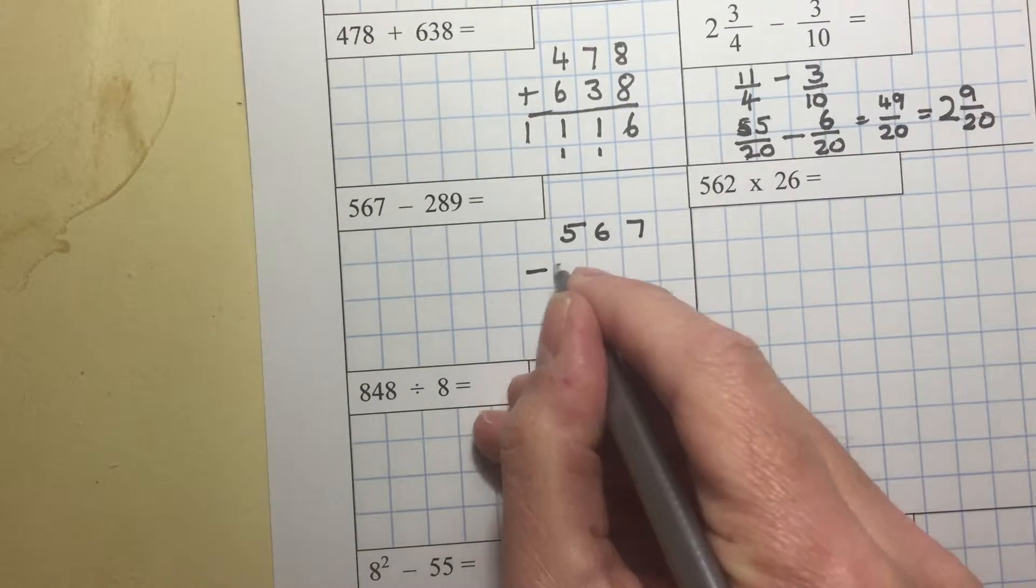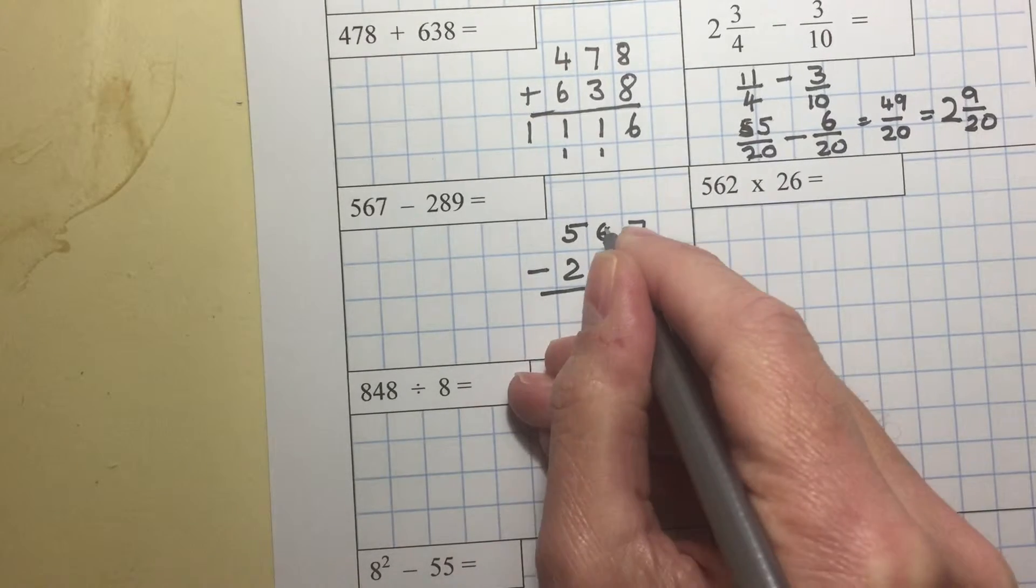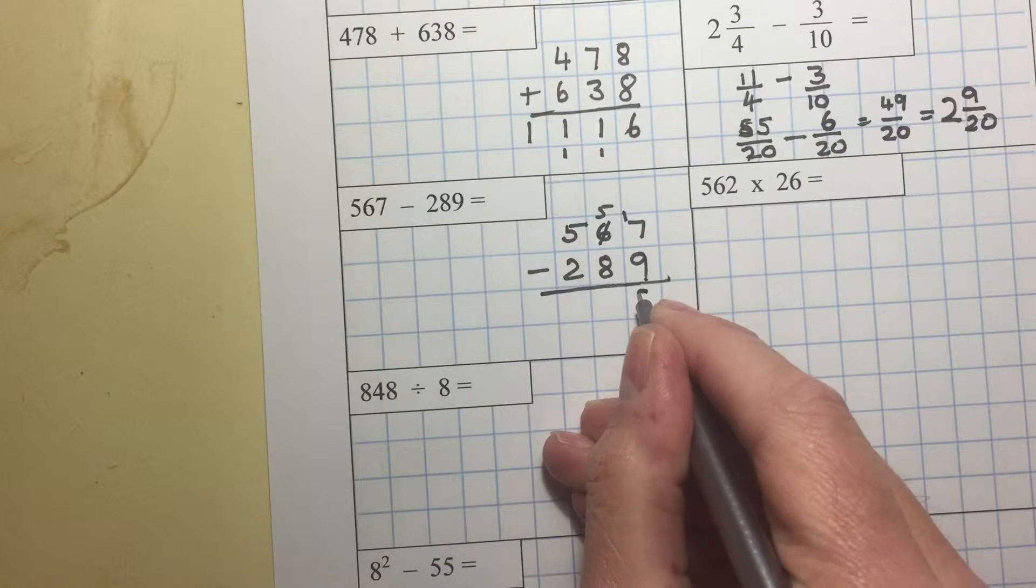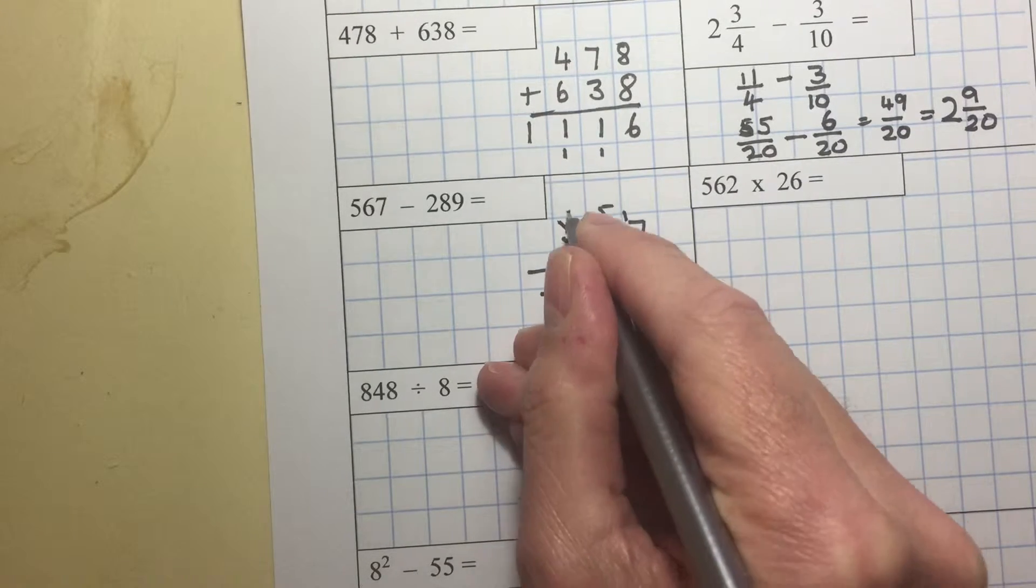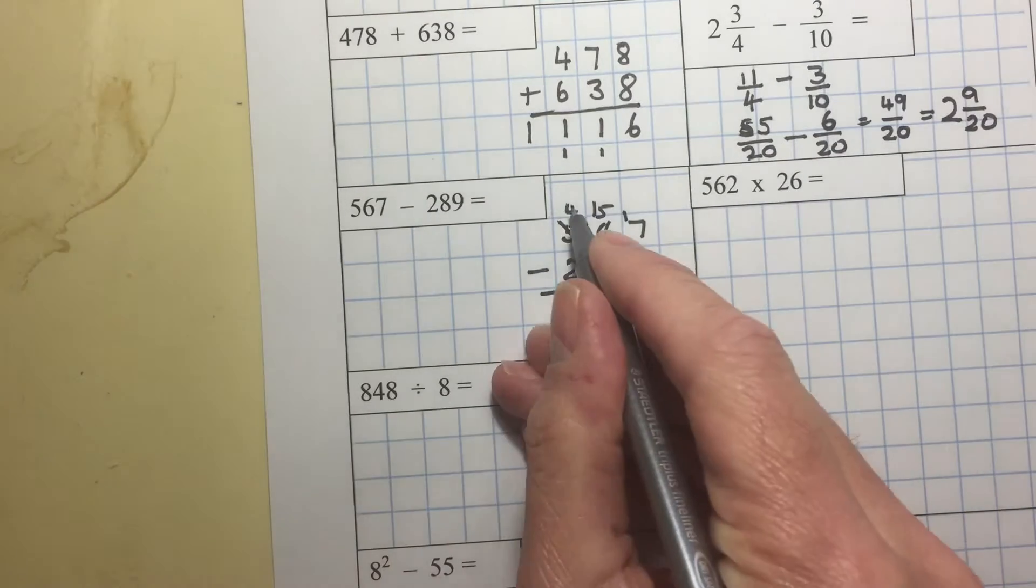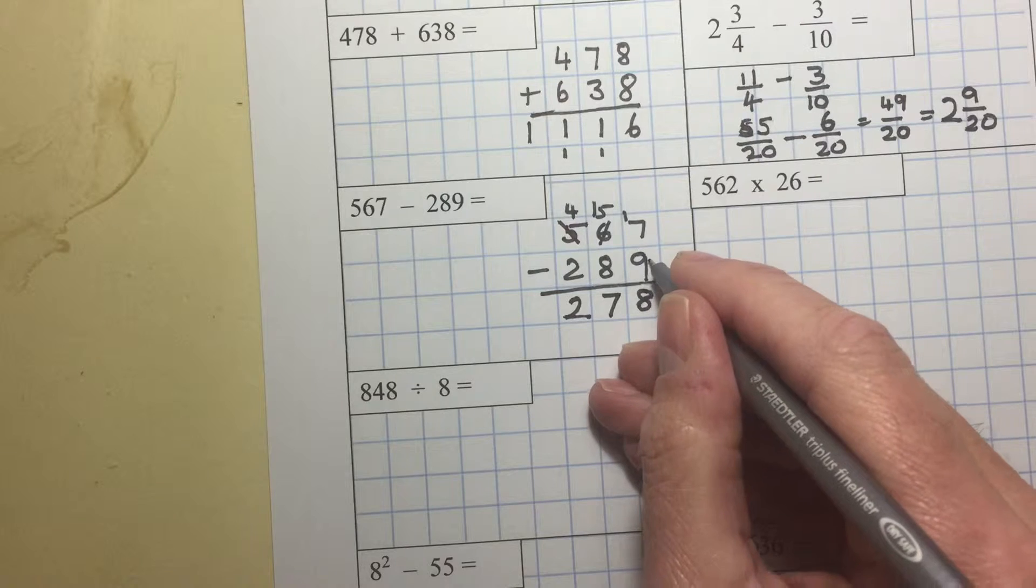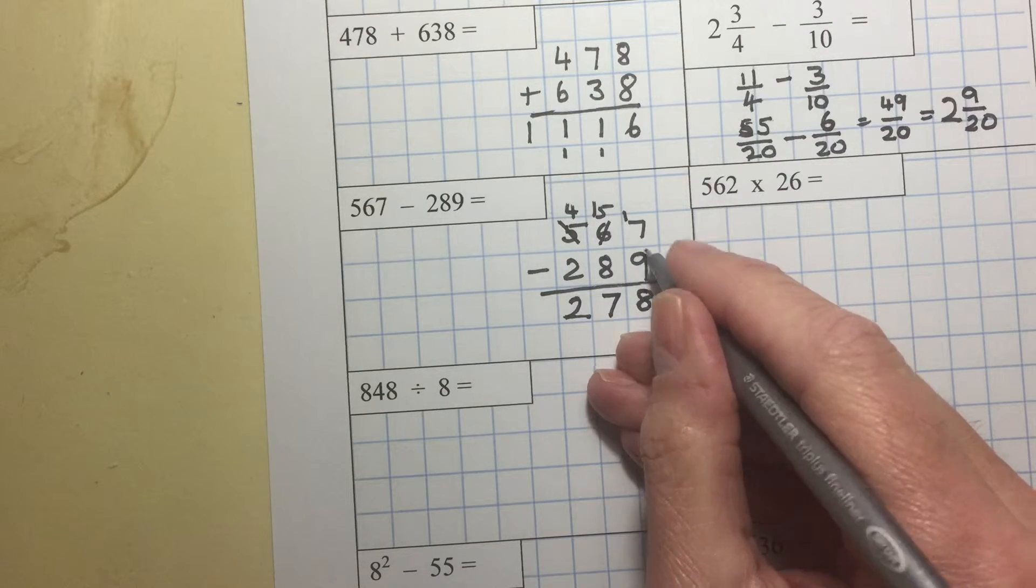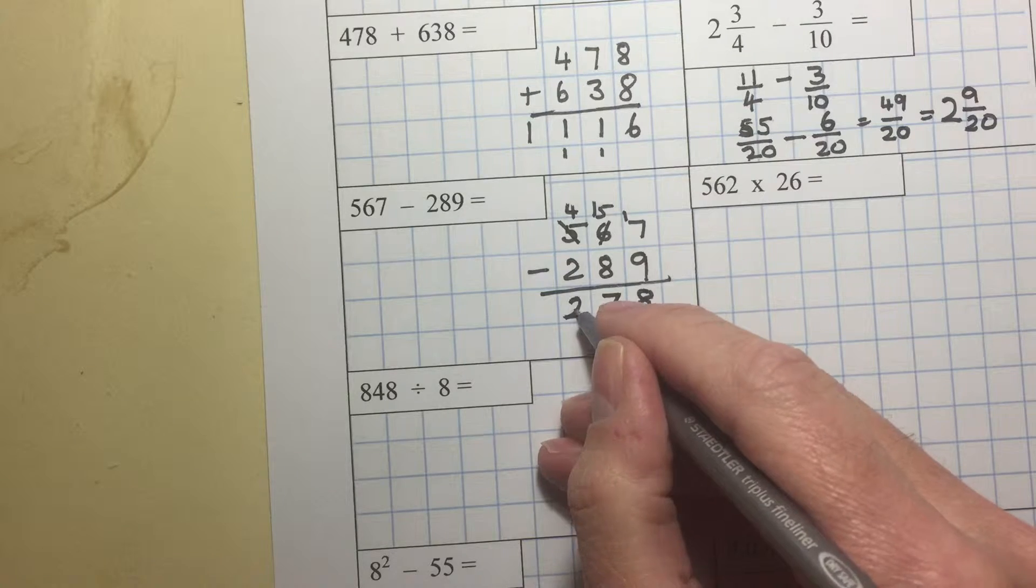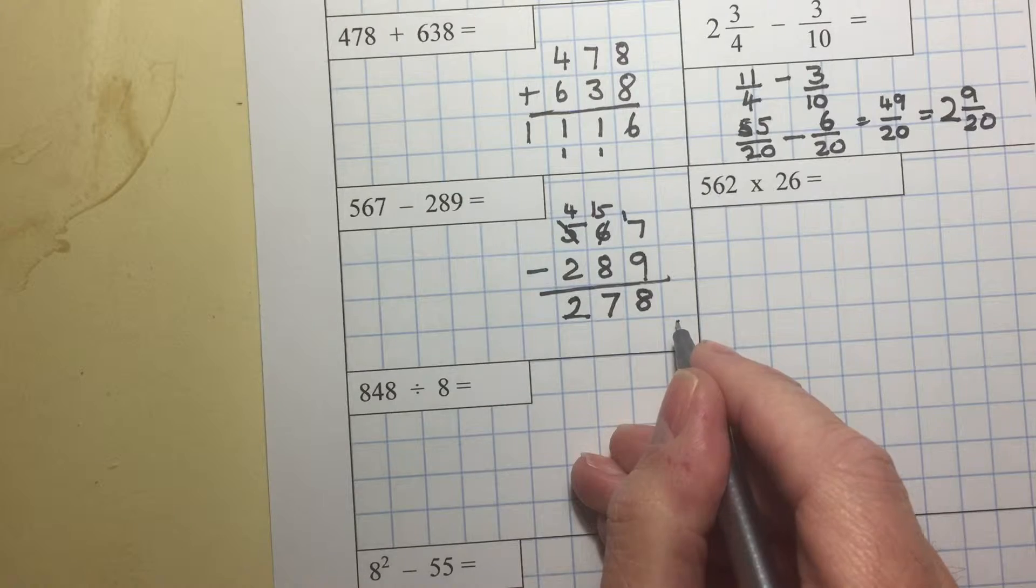567 take away 289. 17 take away 9 is 8. 15 take away 8 is 7. 4 take away 2 is 2. 8 plus 8 is 16 plus 1 is 17. 8, 16, 3, 4, 5. So the check works. And so the answer is 278.